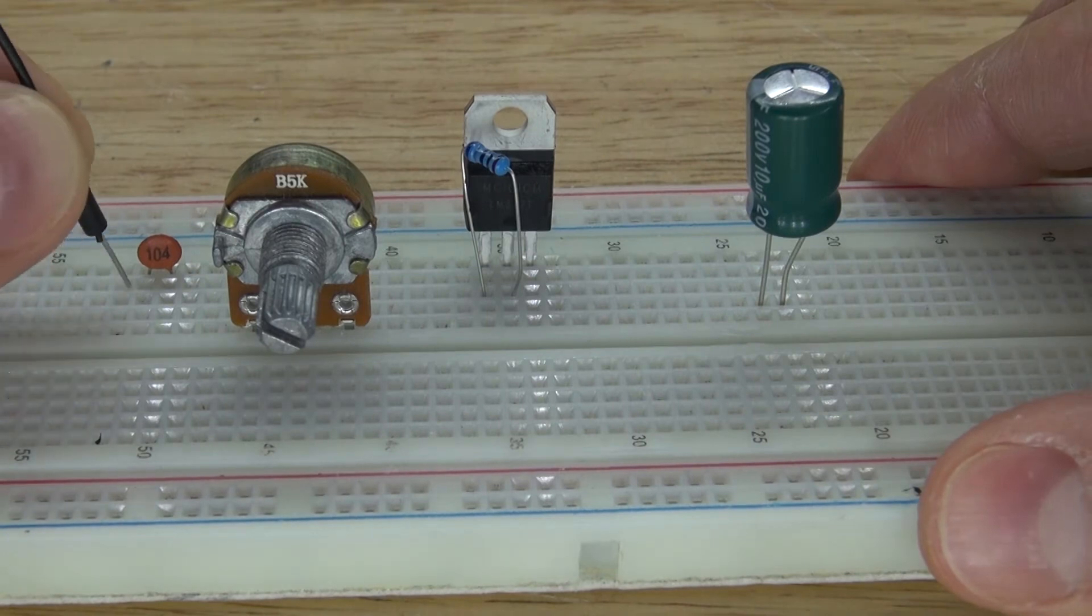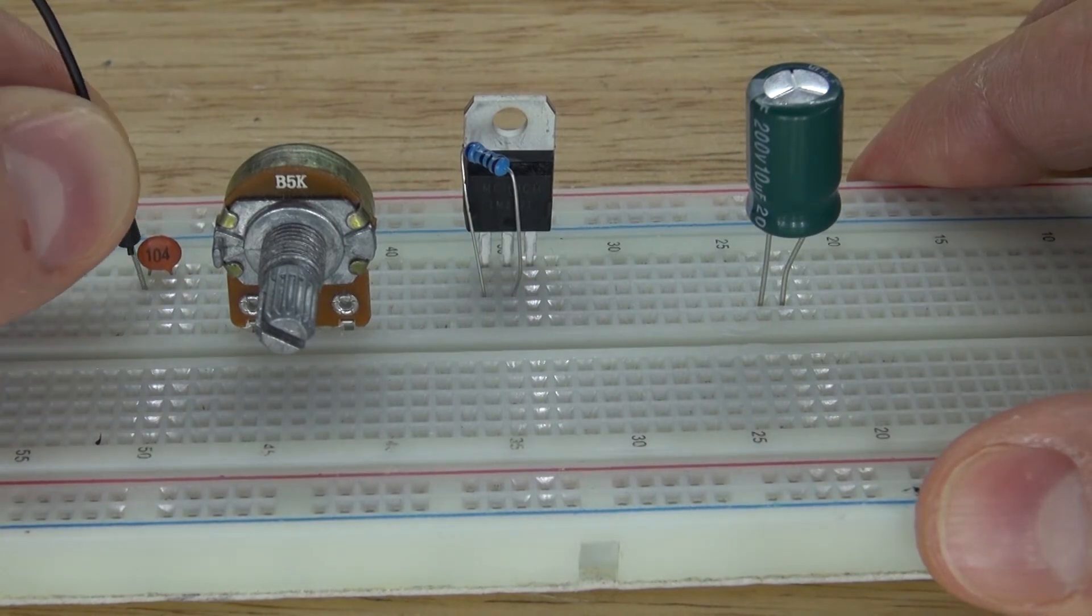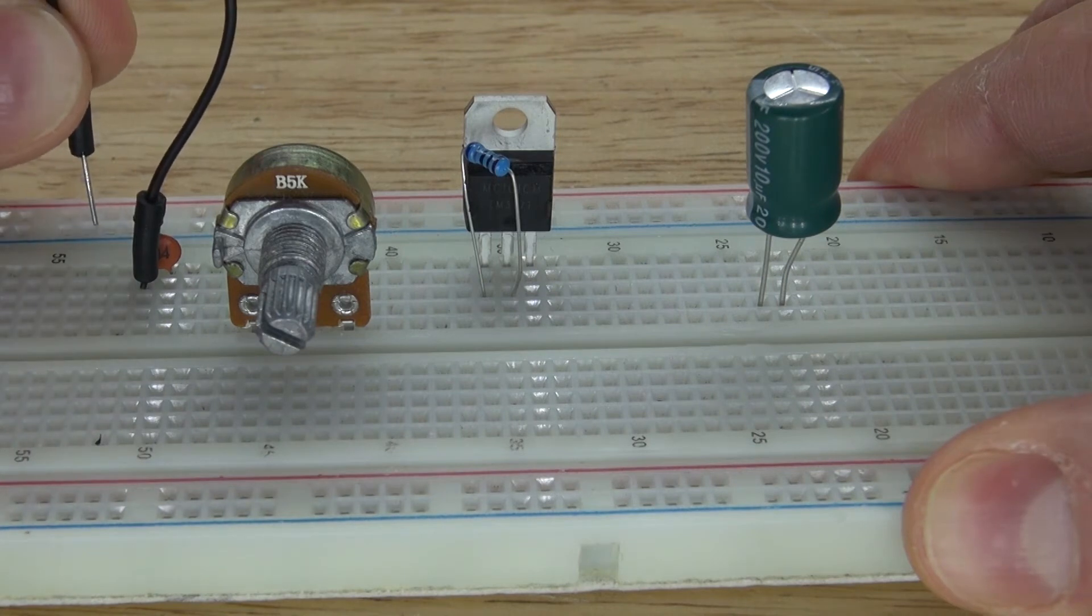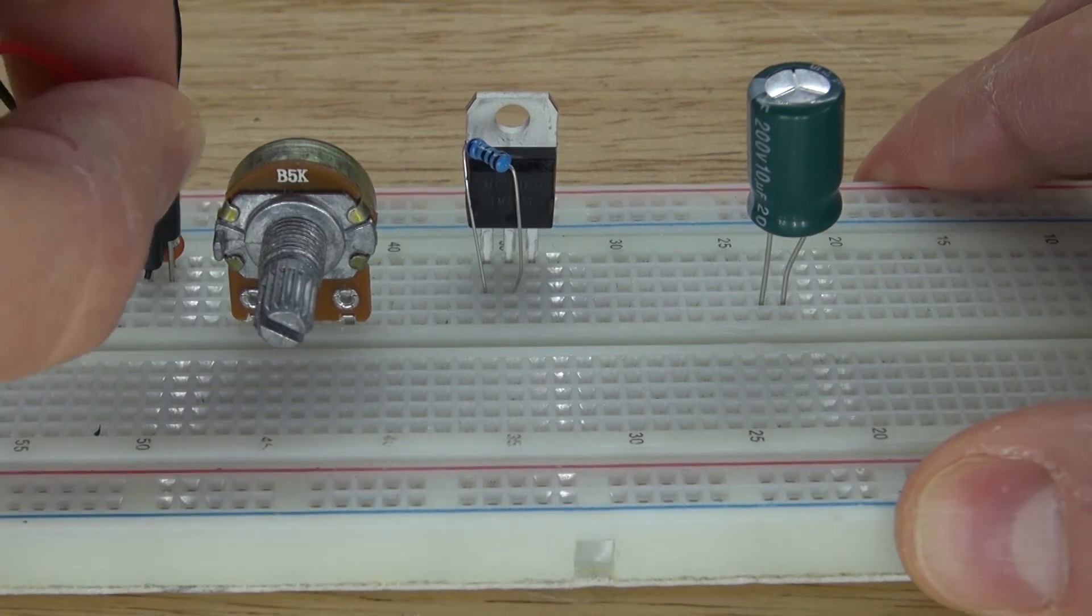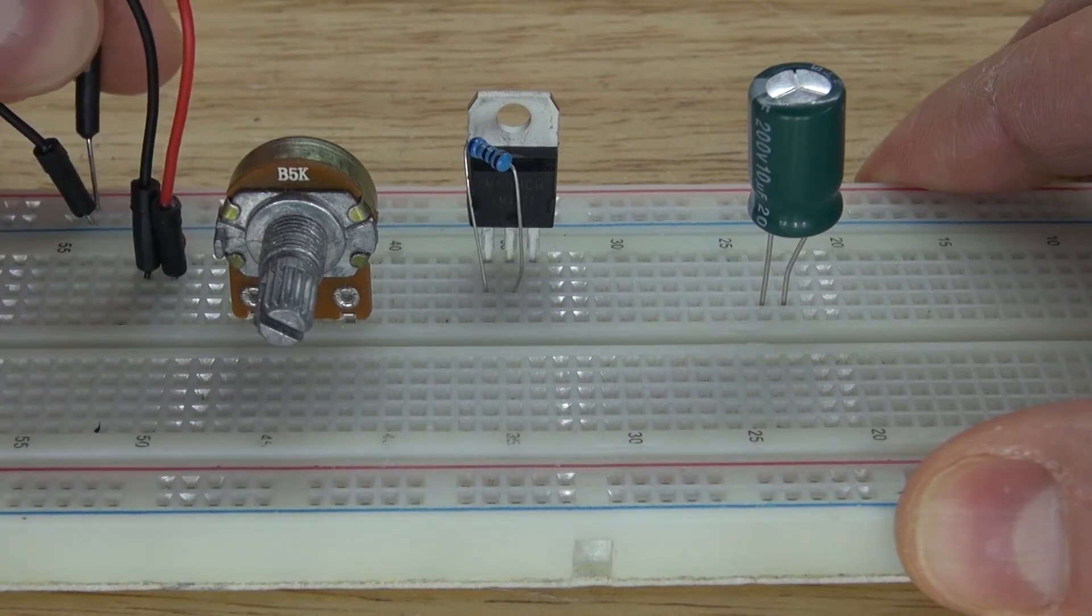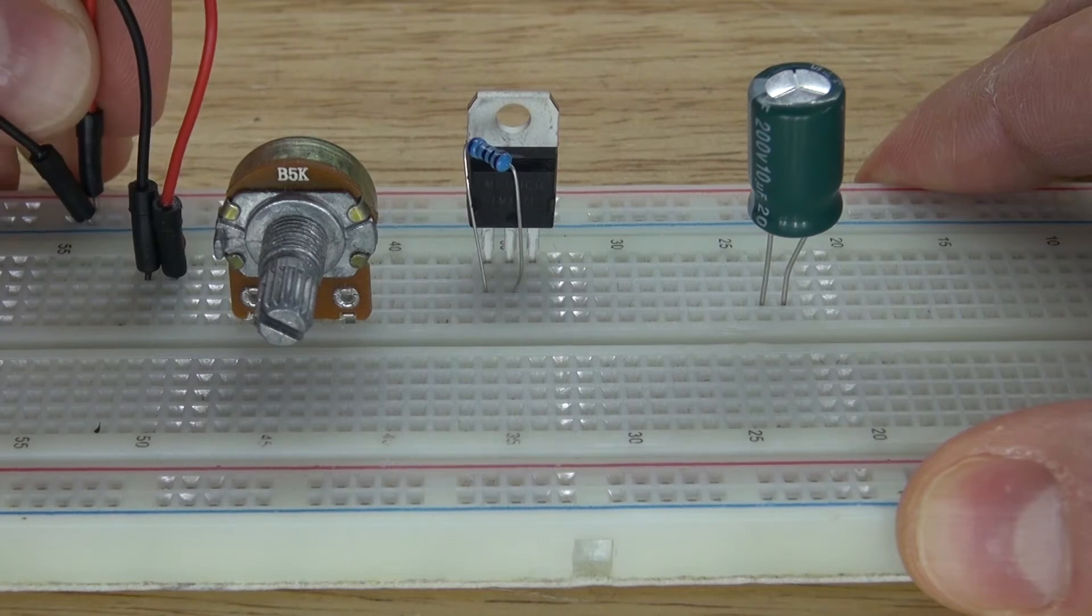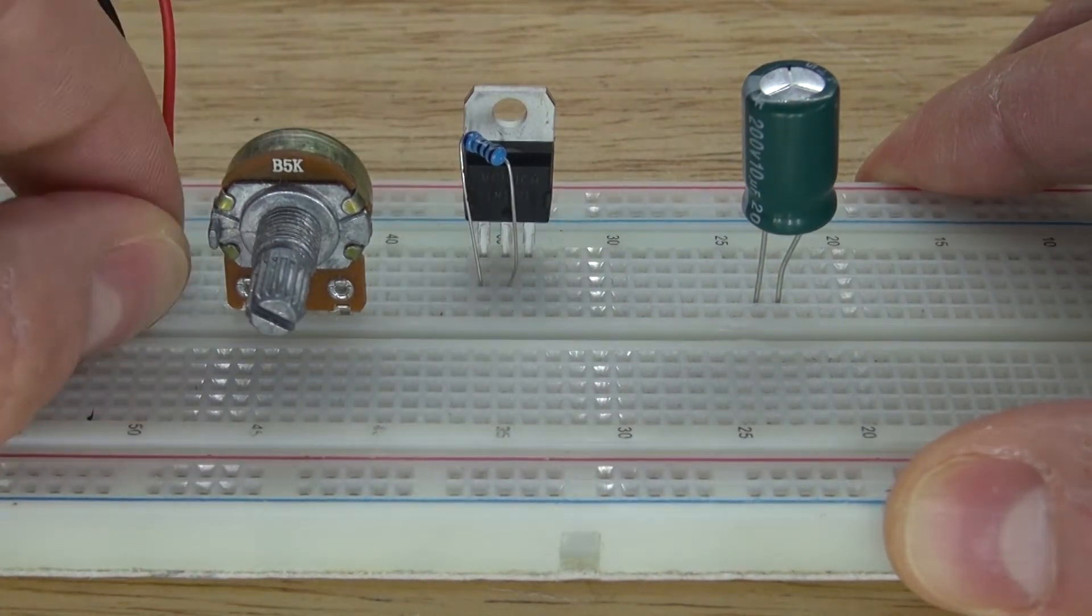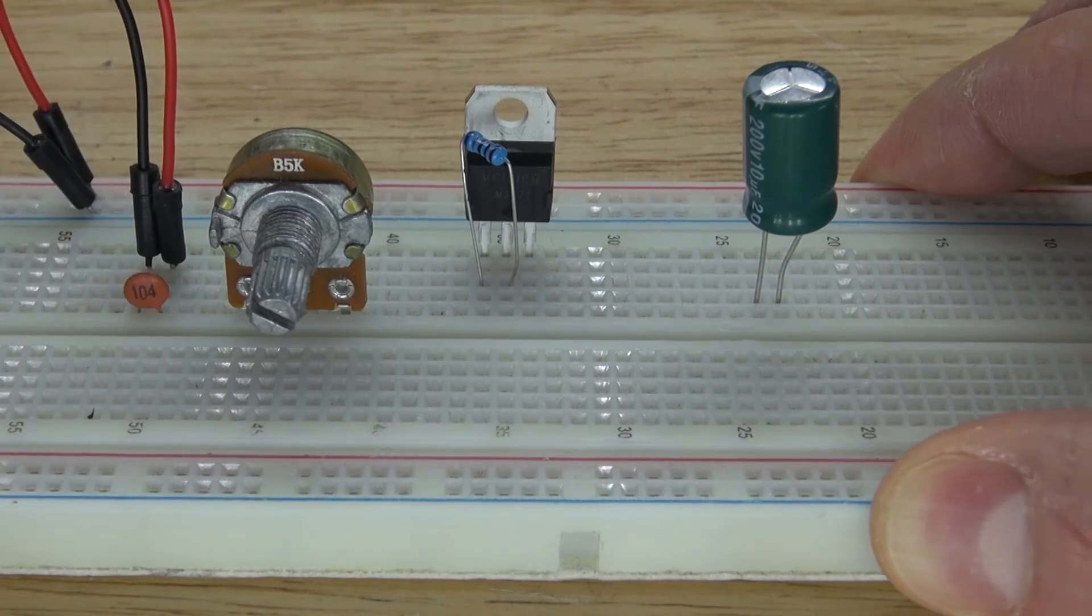Next, I'm going to take this negative jumper wire and connect it to the 104 nanofarad ceramic capacitor, and then connect it to the negative rail. Next, take a positive jumper cable and connect it to the 104 nanofarad ceramic capacitor, and connect that to the positive rail.